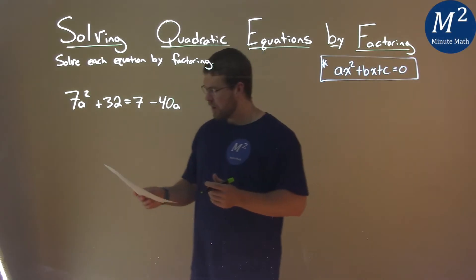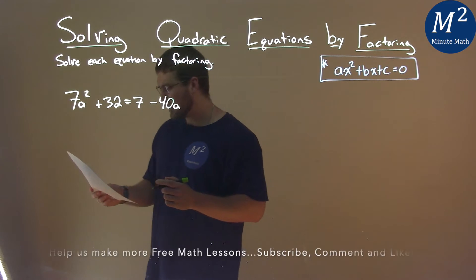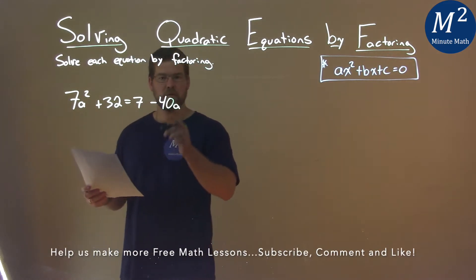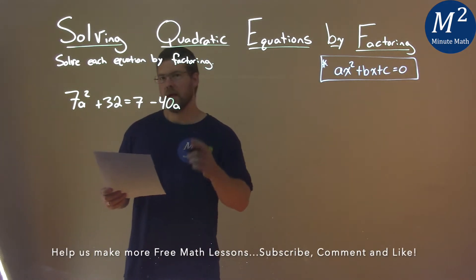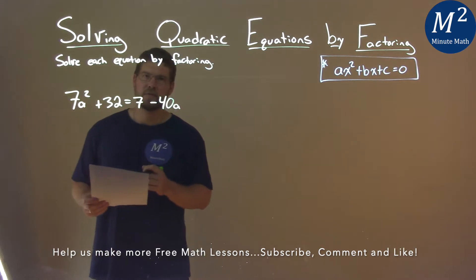We're given this problem right here: 7a squared plus 32 equals 7 minus 40a, and we need to solve this by factoring.